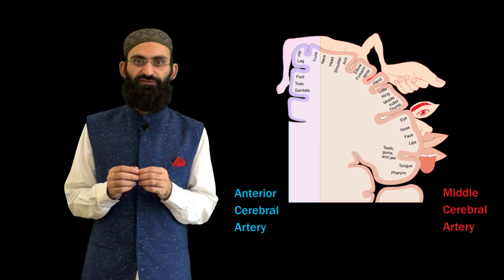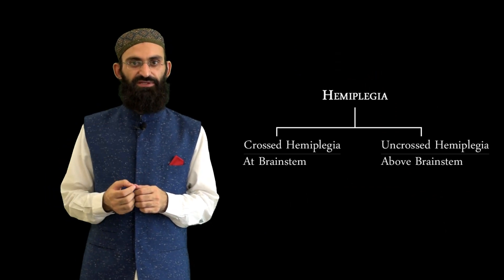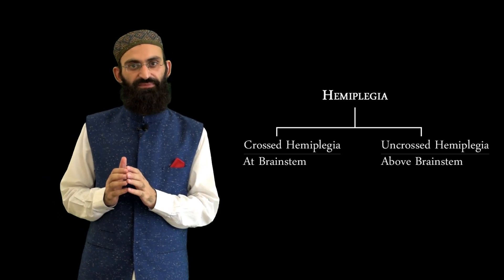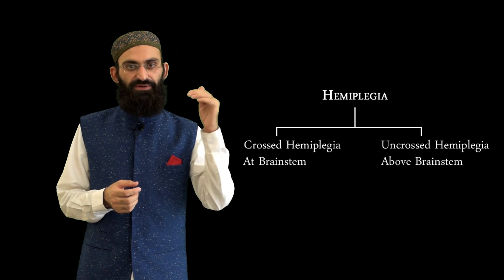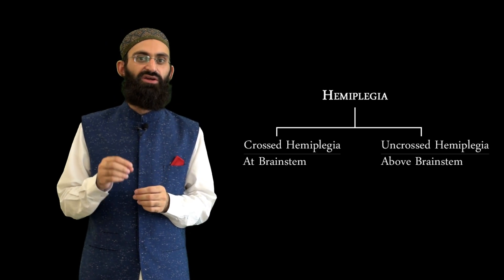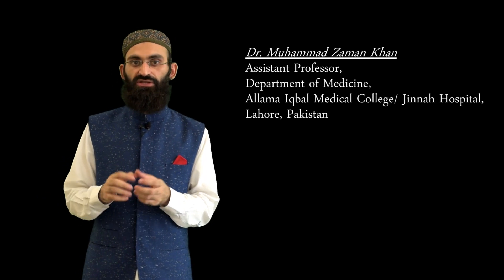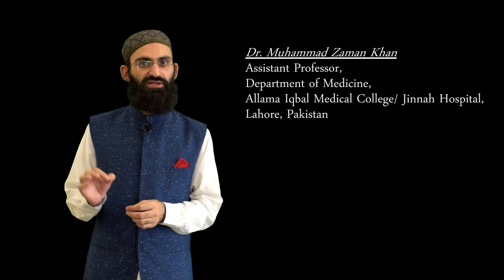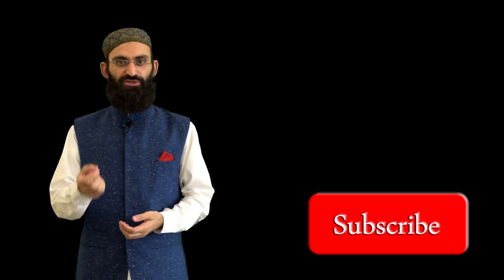To summarize hemiplegia localization: crossed hemiplegia means the lesion is at the level of the brainstem, while uncrossed hemiplegia means the lesion is above the brainstem — either the internal capsule or cerebral cortex. Cortical dysfunction differentiates between these two. The purpose of this educational video is to provide fundamental knowledge of lesion localization; it does not cover every aspect, but with this knowledge you can expand further into the details.